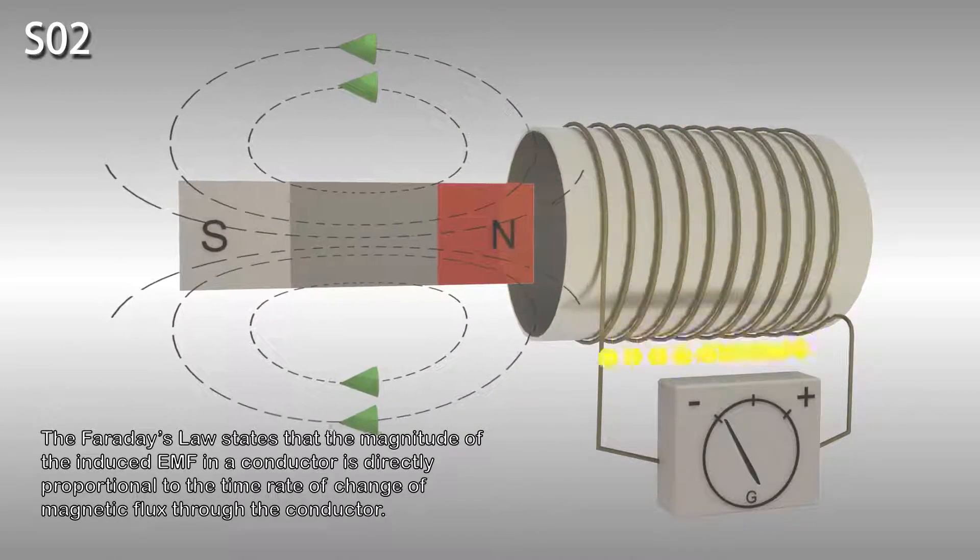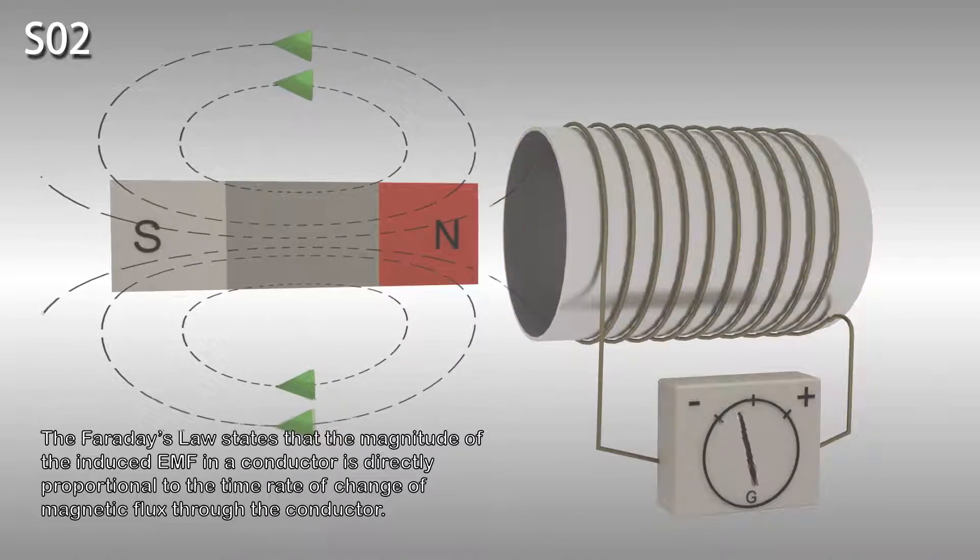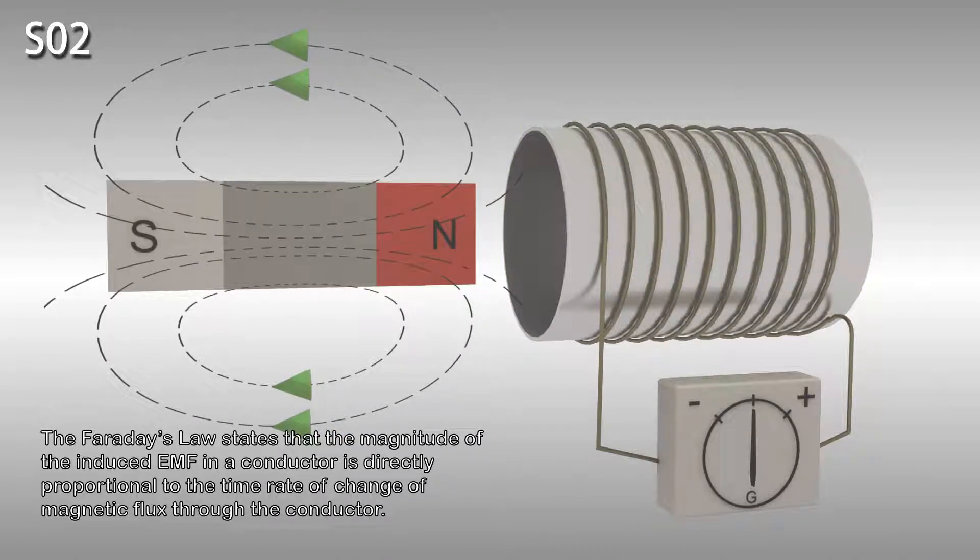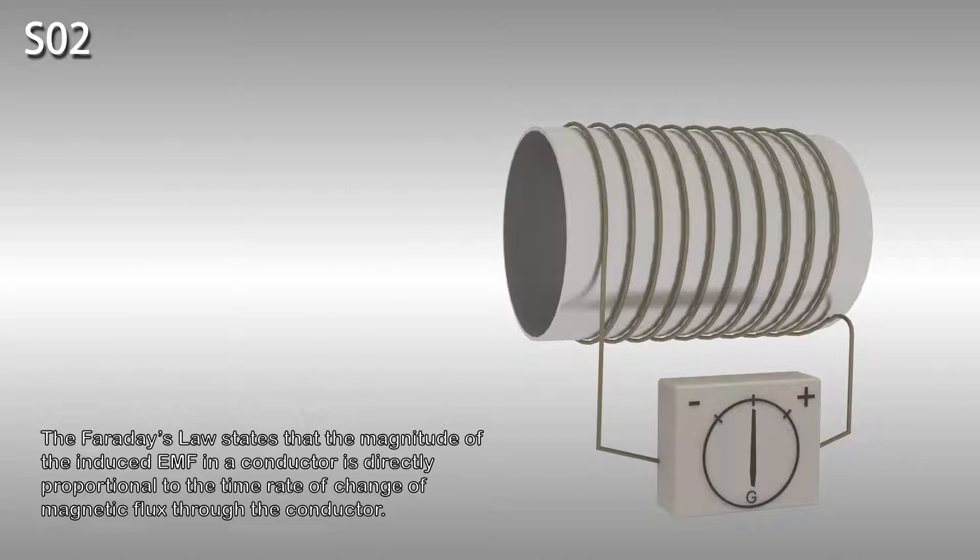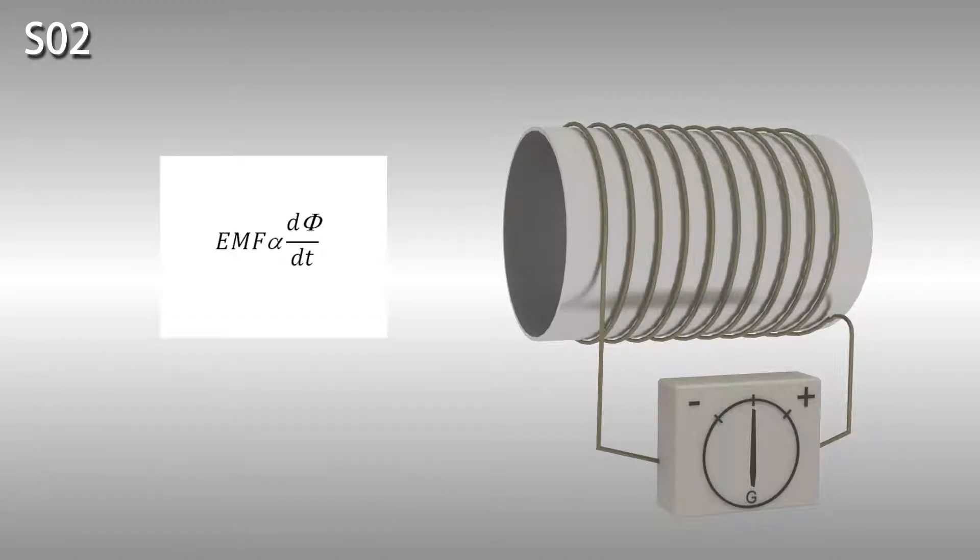Faraday's law states that the magnitude of the induced EMF in a conductor is directly proportional to the time rate of change of magnetic flux through the conductor. In other words, EMF is proportional to delta phi divided by delta T.